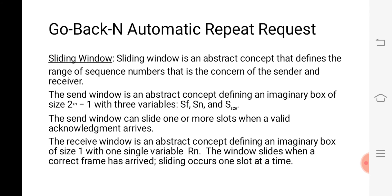One concept we use here is the sliding window. Sliding window is an abstract concept that defines the range of sequence numbers that is the concern of the sender and the receiver. We have values from 0 to 15 for sequence number, but for a particular window we decide how many frames we can take simultaneously. The send window is an abstract concept defining an imaginary box of 2^m minus 1, where three variables are there: SF, SN, and S-size. The send window can slide one or more slots when a valid acknowledgement arrives. The receive window is an abstract concept defining an imaginary box of size 1, with a single variable RN. The window slides when a correct frame has arrived and sliding occurs one slot at a time.